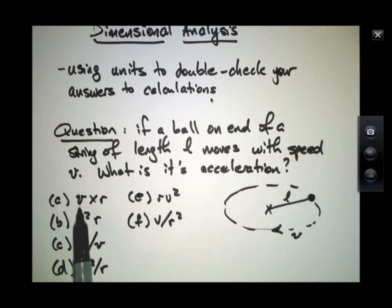This one right here has a length over time because it has a velocity. If I multiply by another length, then I have length squared over time, which is not correct.